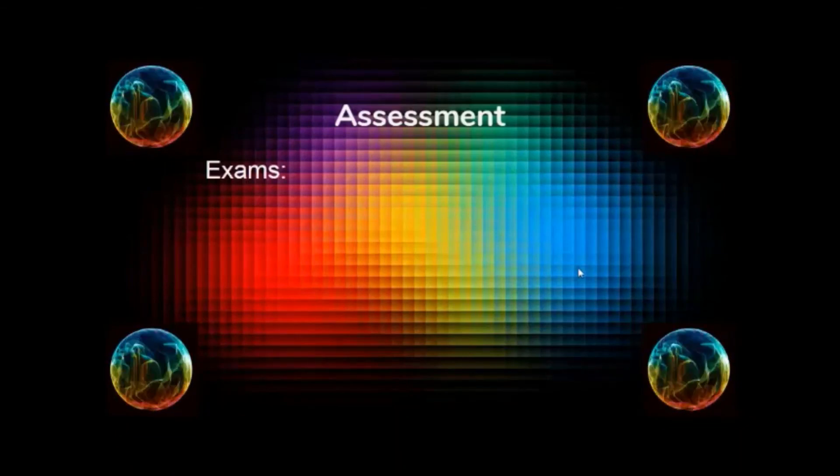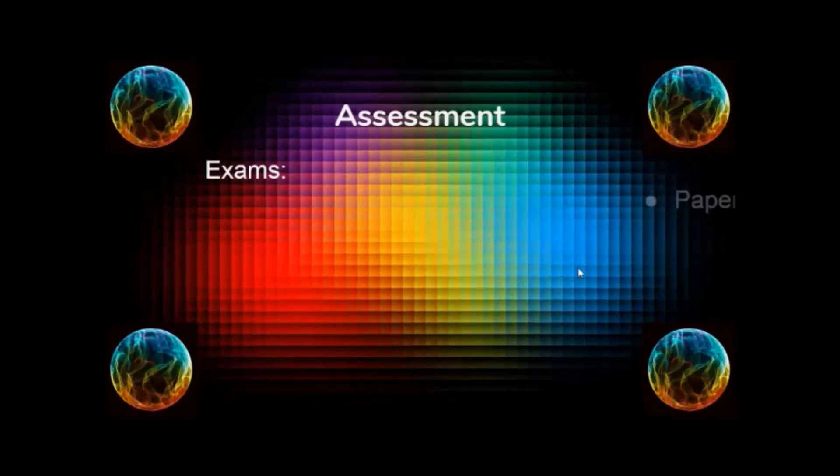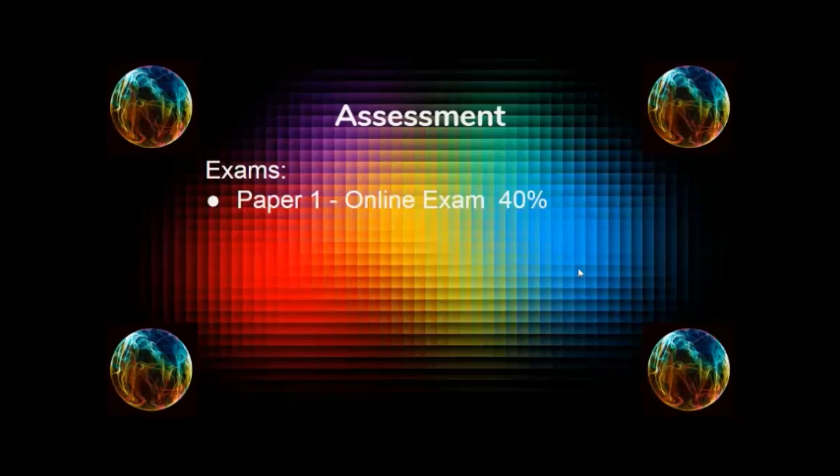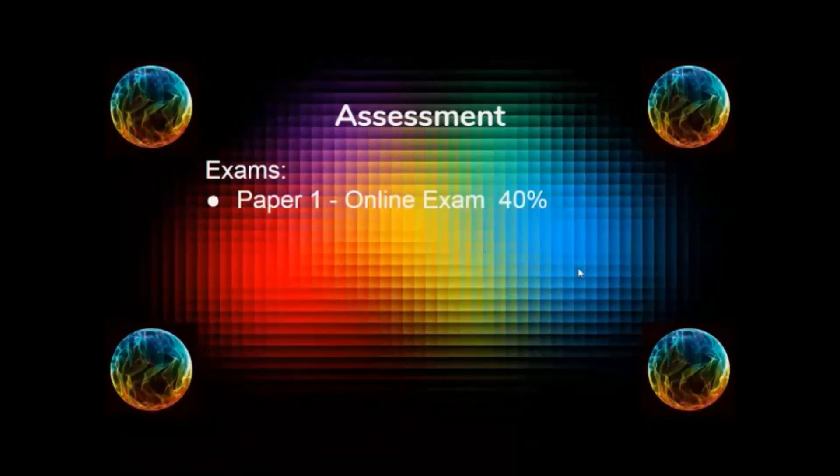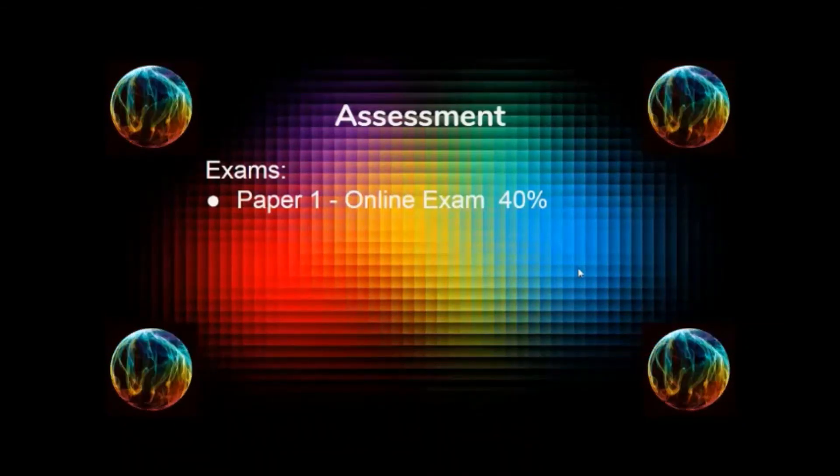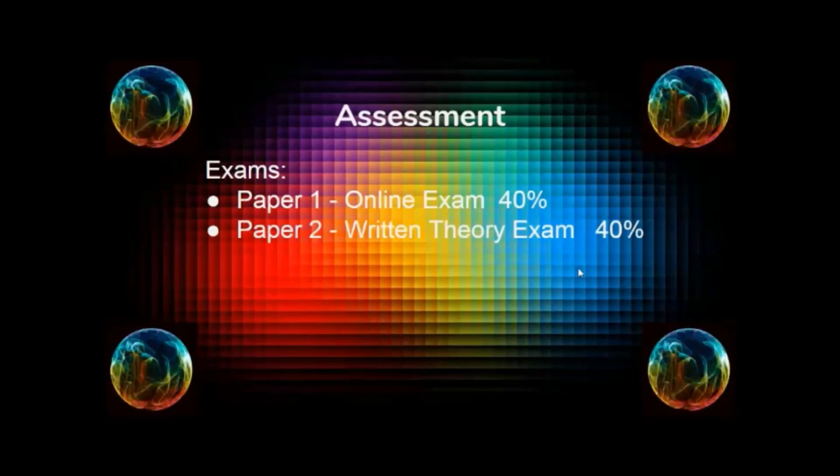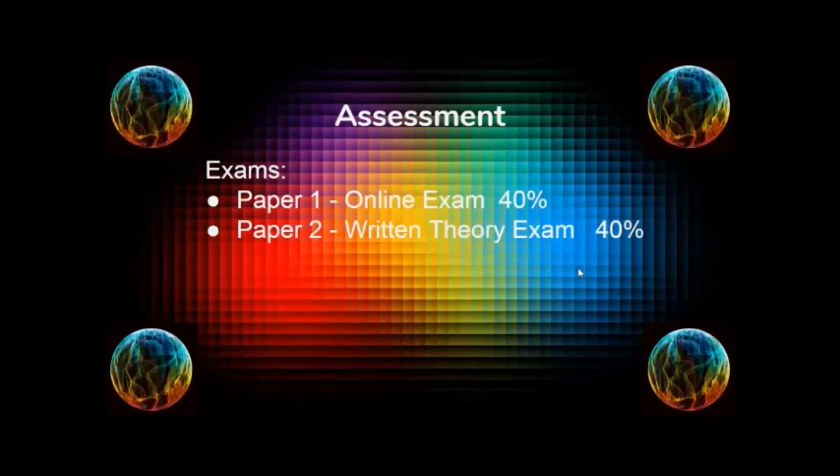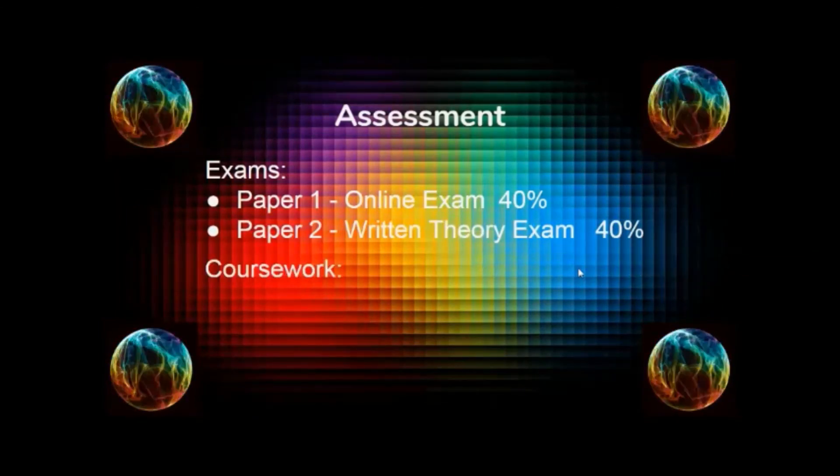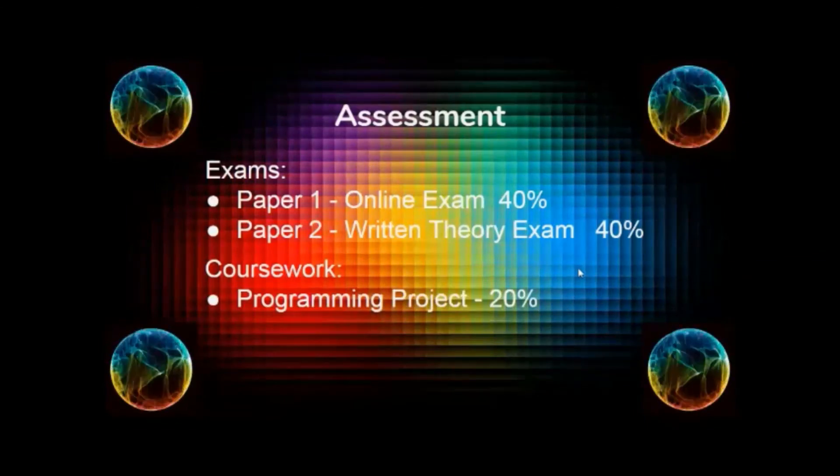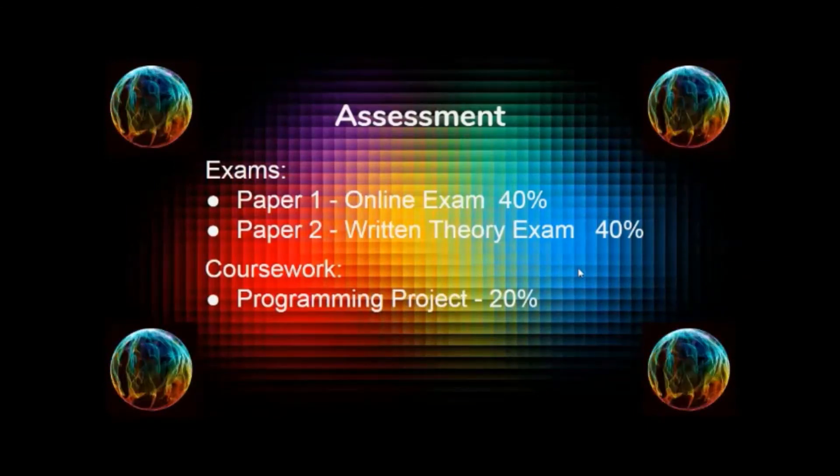Assessment. We have two exams. Paper one is an online programming exam. It's 40% of the assessment. Paper two is a written theory exam. That's also 40% of the assessment. There's coursework, a programming project which is 20% of the assessment.